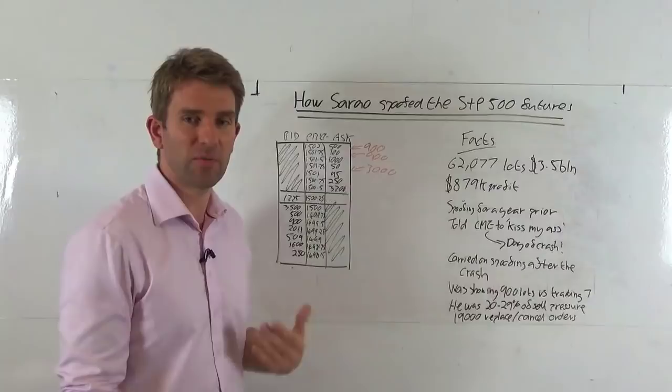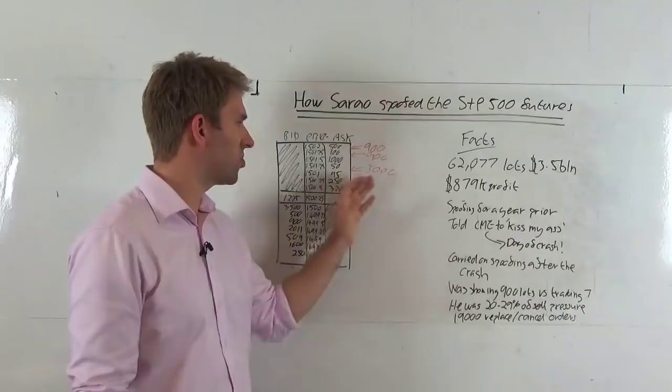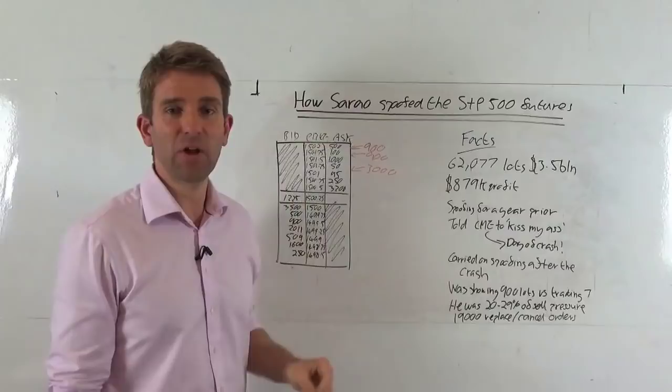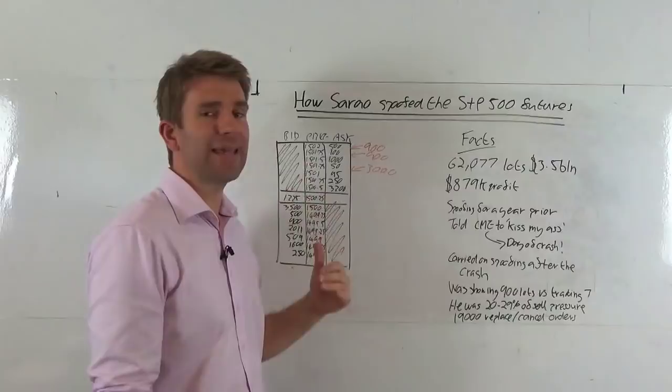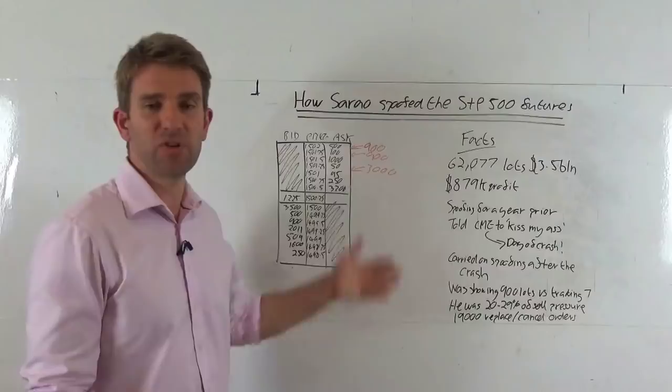Going back to the story, he then created this algo, got someone to create this algo for him that would create an artificial illusion of price. It would cancel orders as soon as it got to them so it was purely a spoofing algo. He didn't want to be filled by it, he just wanted to show size, to show that it looked weak.